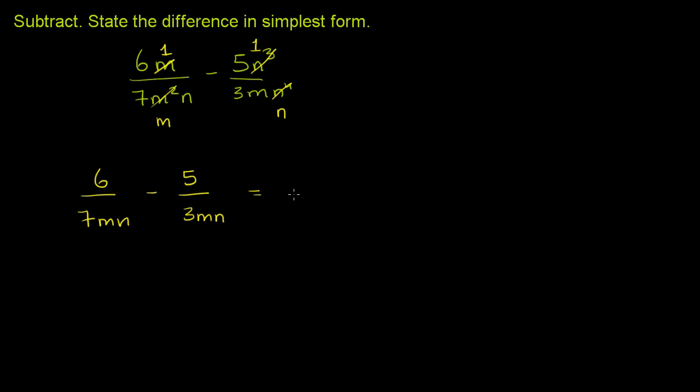So let's think about a common denominator over here. It's going to be something minus something. A common denominator has to be divisible by both 7 and 3, so the least common multiple of 7 and 3 is 21. And it has to be divisible by m and by n. 21mn takes care of this—it's clearly divisible by 7mn and by 3mn. That's our least common multiple, our common denominator.